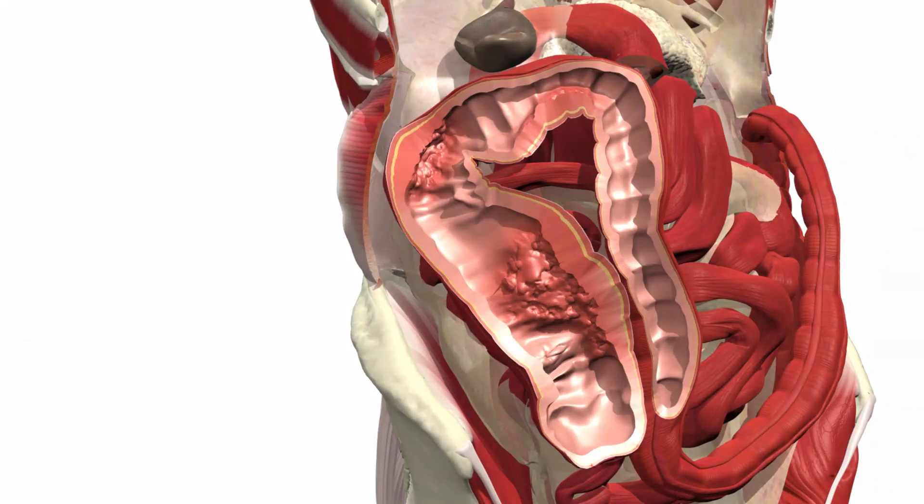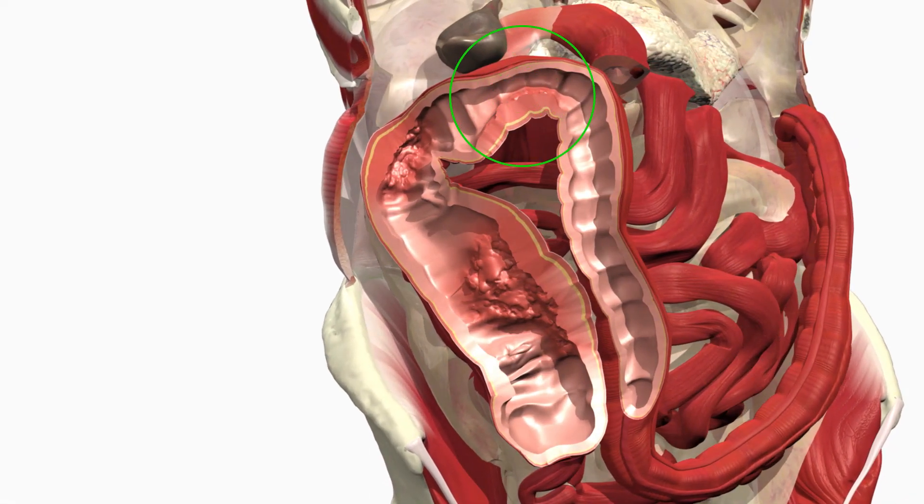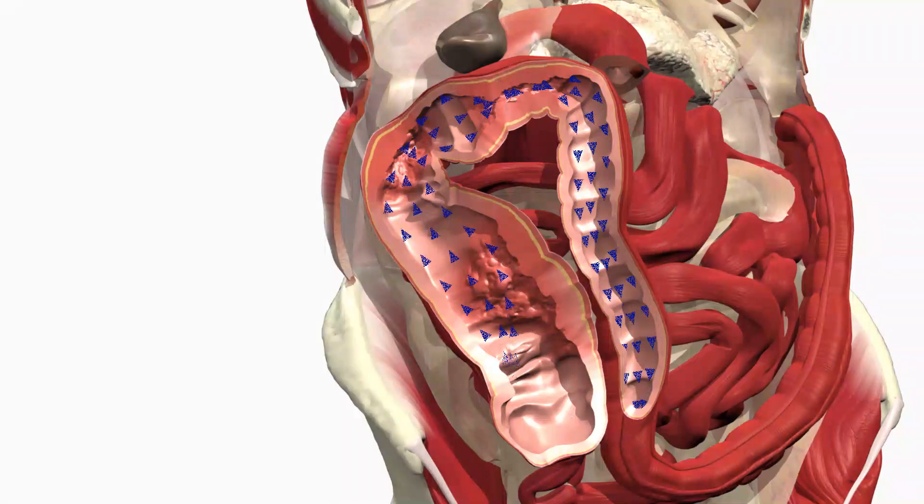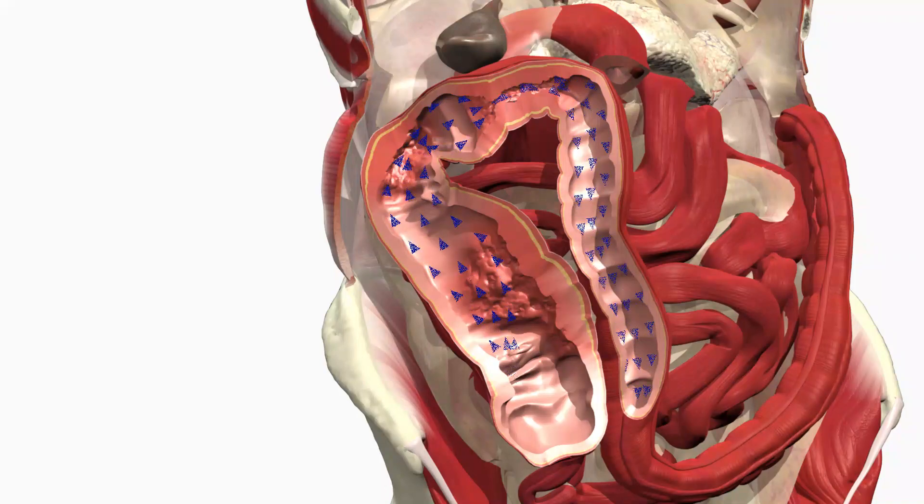As the scar tissue builds up, part of the intestine can narrow, forming a stricture. This narrowing can make it harder for waste to pass through and may ultimately lead to an obstruction.